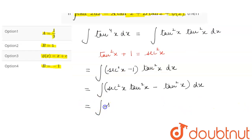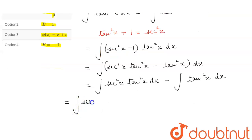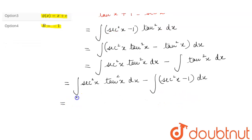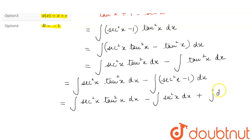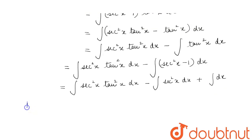This can be written as integration of secant square x tan square x dx minus integration of tan square x dx. For the second integral, we again substitute tan square x as secant square x minus 1, giving us: integration of secant square x tan square x dx minus integration of secant square x dx plus integration of dx.